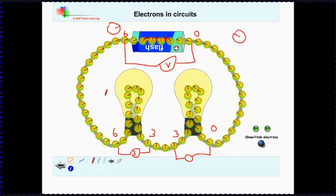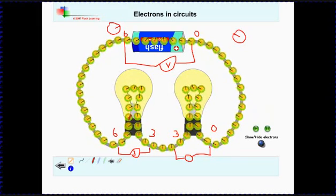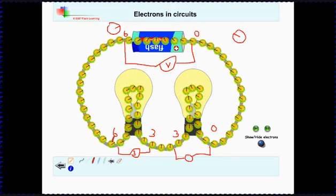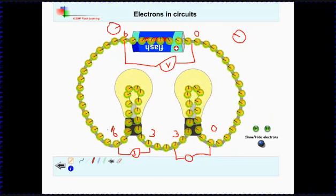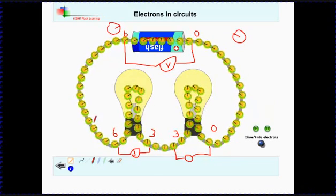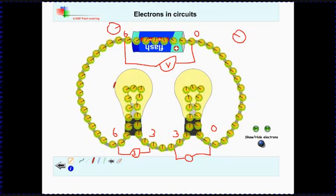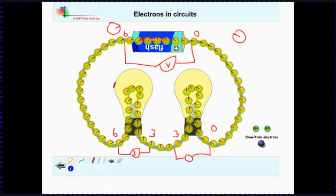Always be imagining these little electrons going around carrying the energy. But of course remember, this isn't six joules per electron, this is six joules for a whole coulomb of charge. So maybe each one of these might represent those six million million million electrons that make up one coulomb of charge.